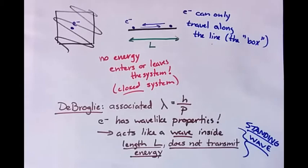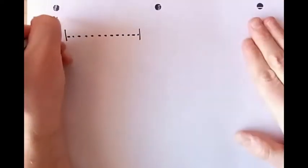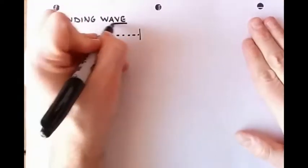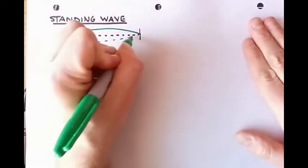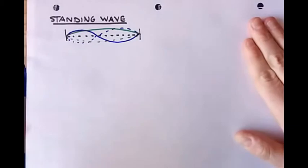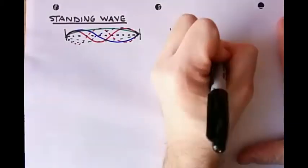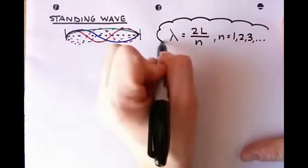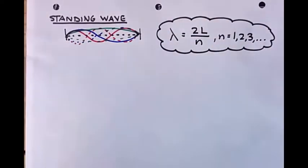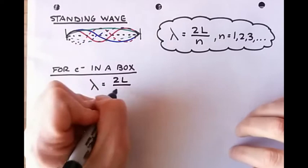Let's go back to standing waves. If you have a standing wave in a tube that's closed at both ends — which is very similar to our electron in a box — it has wavelengths equal to 2L over N, where L is the length of the tube, and N equals 1, 2, 3 — all positive non-zero integers. The electron is very similar to this model, so for an electron the de Broglie wavelengths should also equal 2L over N.